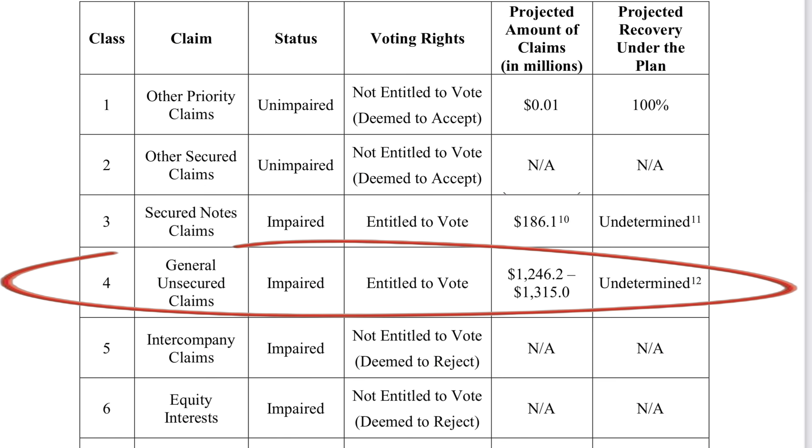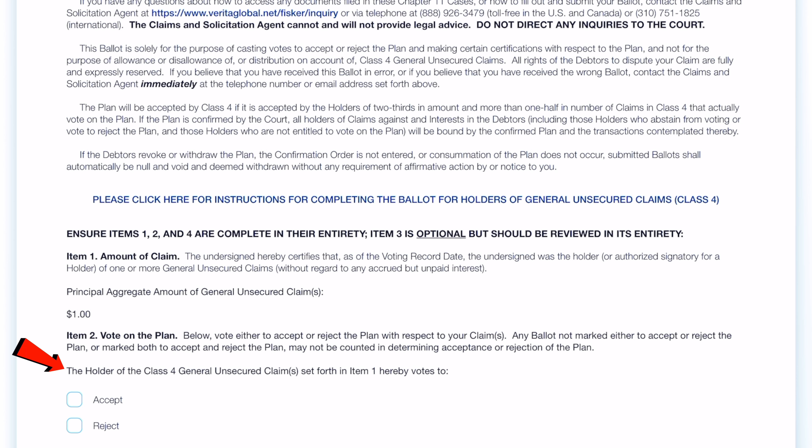With that in mind, the holder of the Class 4 general unsecured claim set forth hereby votes to either accept or reject the plan. I will not tell you what my vote is, as I don't want to influence you.